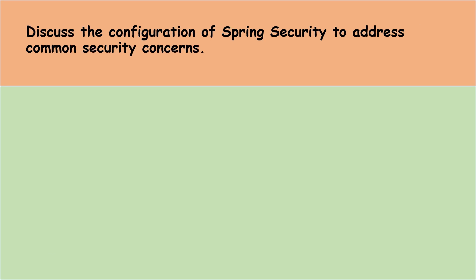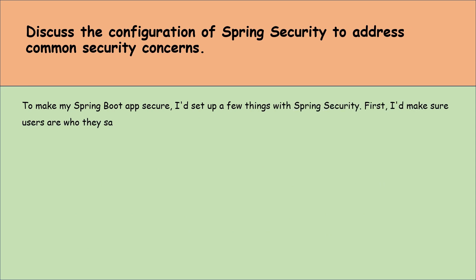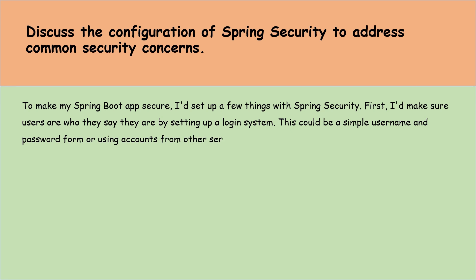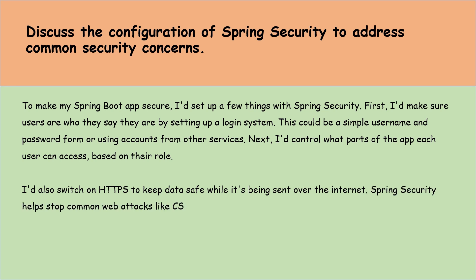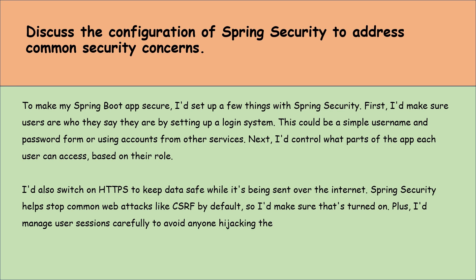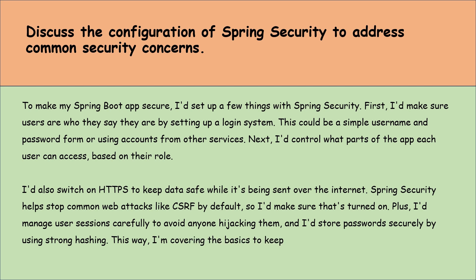Discuss the configuration of Spring Boot Security to address common security concerns. To make my Spring Boot application secure, I would set up a few things with Spring Security. First, I would make sure users are who they say they are by setting up a login system — this could be a simple username and password form or using accounts from other services. Next, I would control what parts of the application each user can access based on their roles. I would also switch on HTTPS to keep data safe while it's being sent over the Internet. Spring Security helps stop common web attacks like CSRF by default, so I would make sure that it's turned on. Plus, I would manage user sessions carefully to avoid hijacking, and store passwords securely using strong hashing.